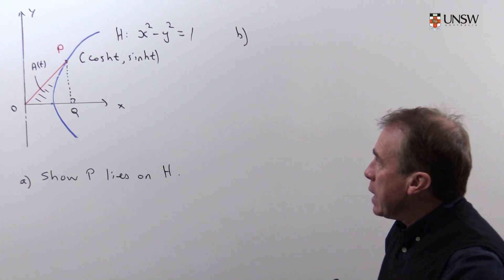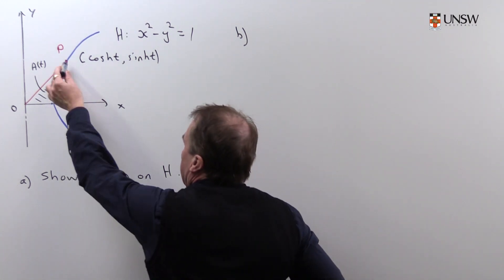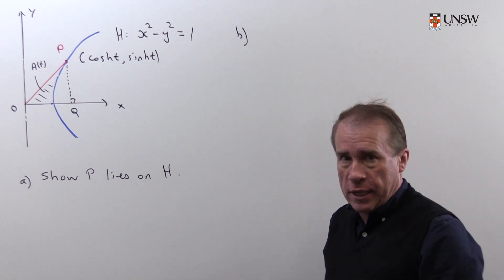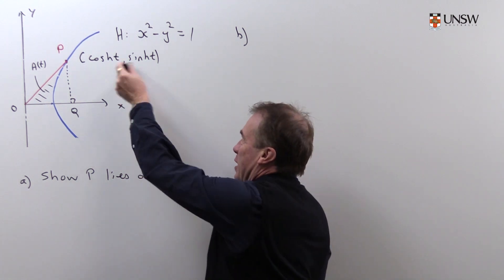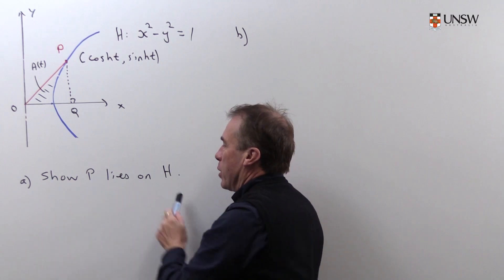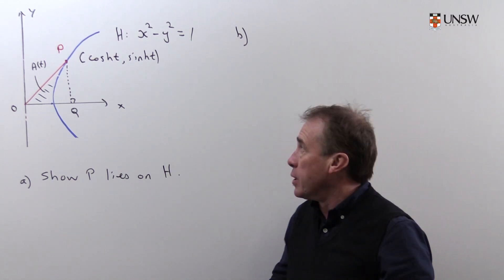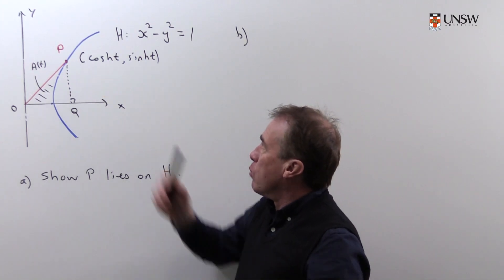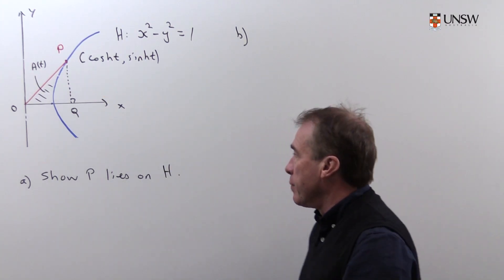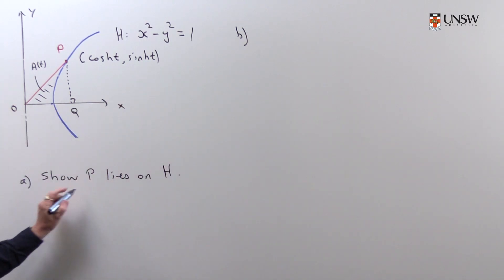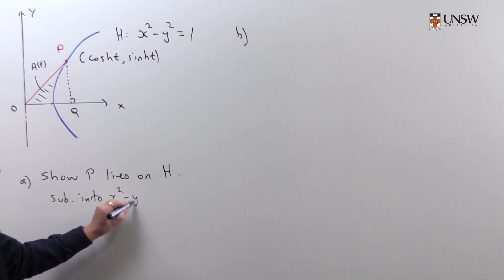The first thing is that we've marked on here a point P, and I've marked the coordinates as cosh t, sinh t, and the first thing I want to do is to show that that actually is correct. In other words, this point P does, in fact, lie on the hyperbola H with x value cosh t and y coordinate sinh t. And that's very easy to show because I just need to substitute into the equation x squared minus y squared equals 1 and show that it works.